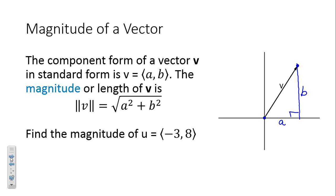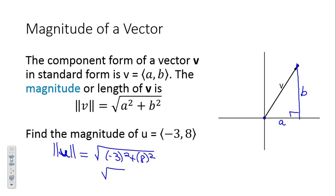What is the magnitude of vector U with component form ⟨−3, 8⟩? We take the square root of (−3)² + 8² = √(9 + 64) = √73. That's the magnitude of vector U. It won't simplify further — if a radical can break down you pull out perfect squares, but this one cannot be simplified.